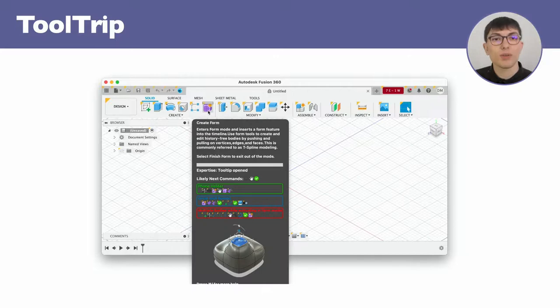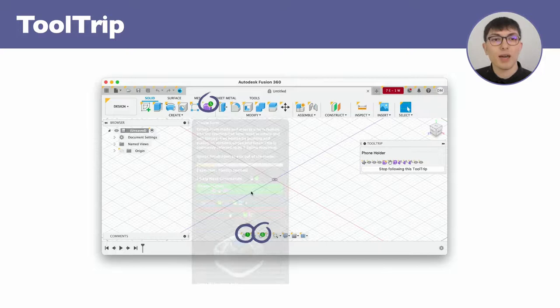We then augmented Fusion 360's tooltips with ToolTrip. Users can select among different workflows involving the command. After selecting one of the trips, the commands involved will display a colored badge and users can look for them to guide their trial and error episode.